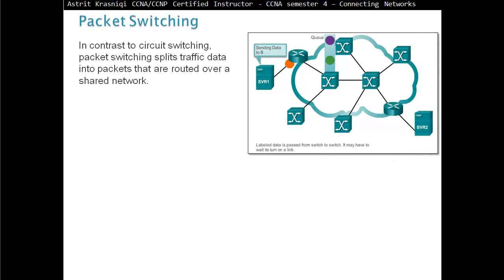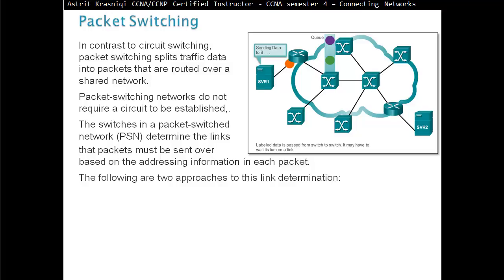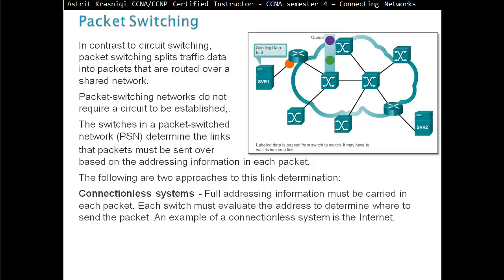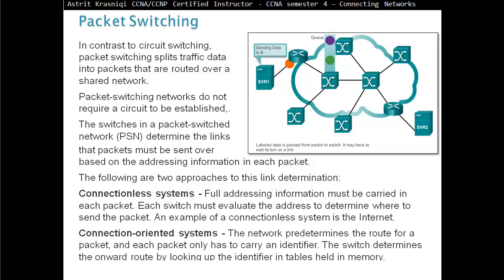Packet switching. In contrast to circuit switching, packet switching splits traffic data into packets that are routed over a shared network. Packet switching networks do not require a circuit to be established. The switches in a packet switched network determine the link that packets must be sent over based on the address information in each packet. The following are two approaches to this link determination. We have connectionless systems. Full addressing information must be carried in each packet. Each switch must evaluate the address to determine where to send the packets. An example of a connectionless system is the internet. Connection-oriented systems: the network predetermines the route for a packet and each packet only has to carry an identifier. The switch determines the onward route by looking up the identifier in tables held in memory.